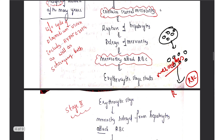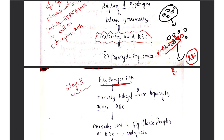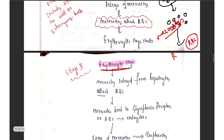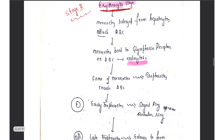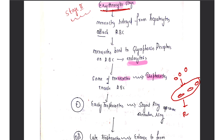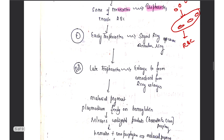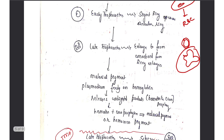Once the merozoites attack the RBC, the second stage — the erythrocytic stage — begins. The merozoites enter inside the RBC through endocytosis. The merozoites then get converted again into trophozoites inside the RBC. The early trophozoite appears in the signet ring form, and in the late trophozoite stage, some will enlarge to form an amoeboid appearance. All this process is occurring inside the RBC.